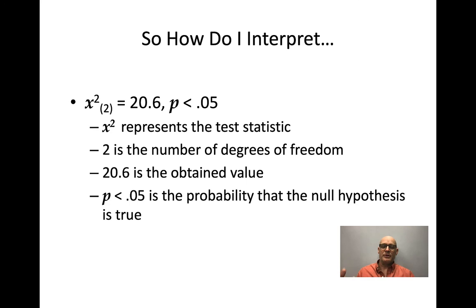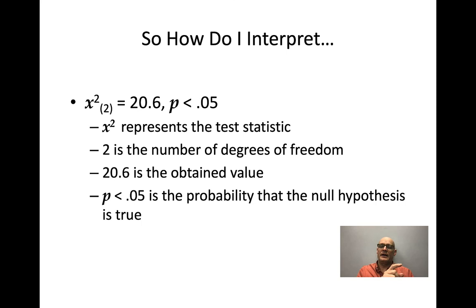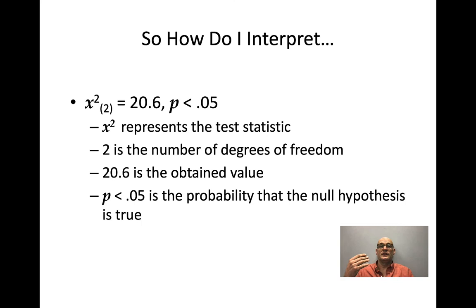The chi-square value is a test statistic. We look it up in a table using degrees of freedom to find the probability that the groups are the same. You'll see this over and over: test statistic equals some value, p equals some value. What you really care about is the p-value — the probability that the null hypothesis is true. In this instance, p equals 0.05, meaning there's a 5% chance the null hypothesis is true. That means there's a 95% chance the groups are different — we're 95% confident the groups differ.